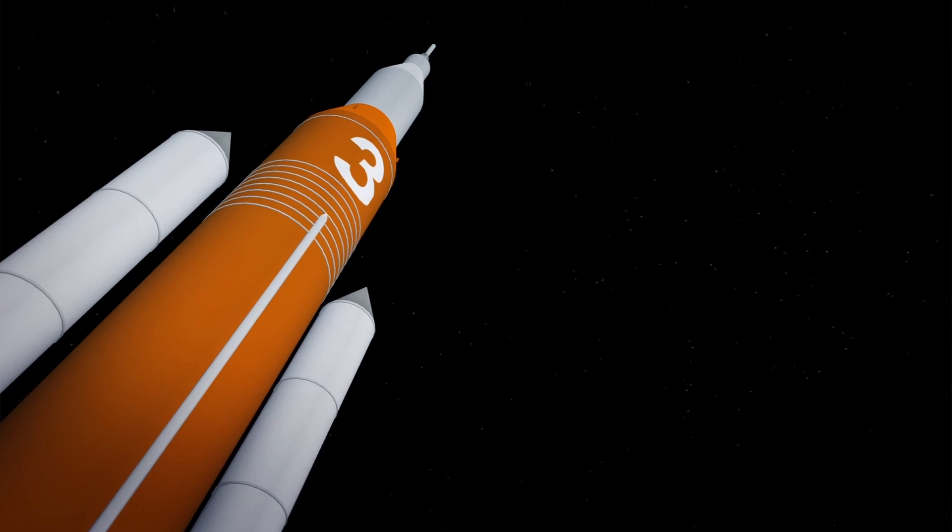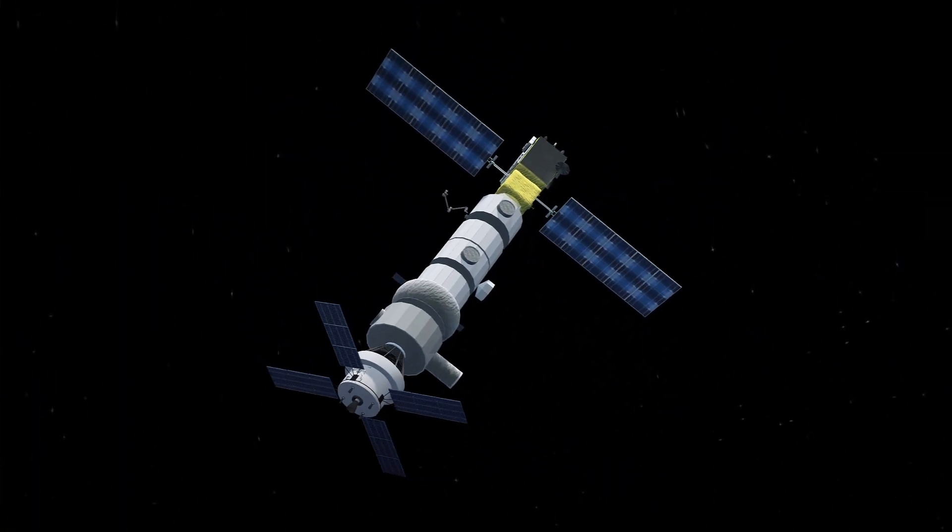Artemis 3 will take a space crew and dock at the Gateway before the crew makes its way down to the moon via a lander.